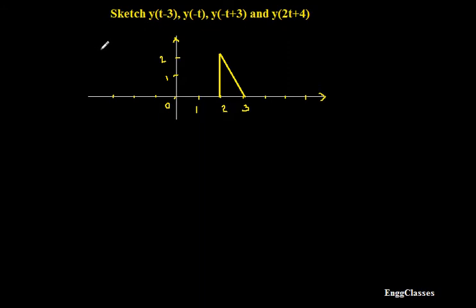The task is: this is the given signal, I would call it y of t, which is expressed with respect to t — a triangular signal. The task is to sketch y of t minus 3, y of minus t, y of minus t plus 3, and lastly y of 2t plus 4. The basic operations involved in these signals are time shift, reflection, and scaling.